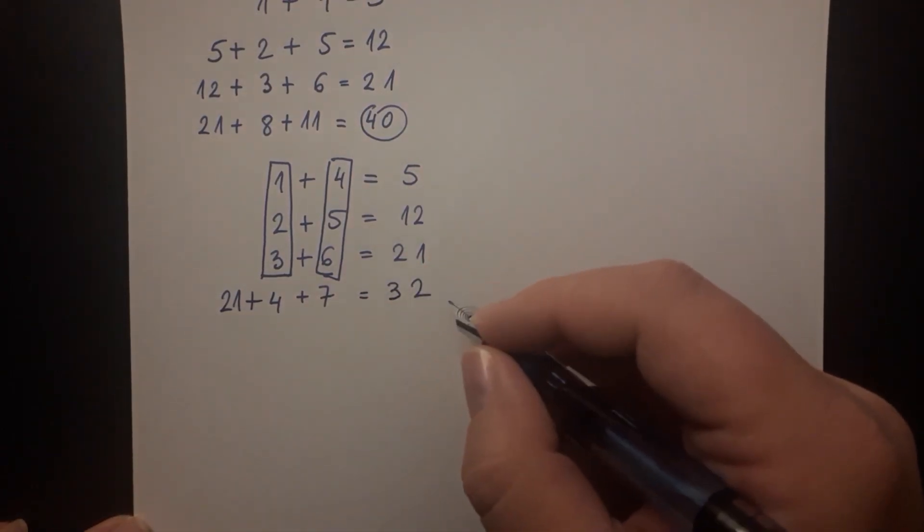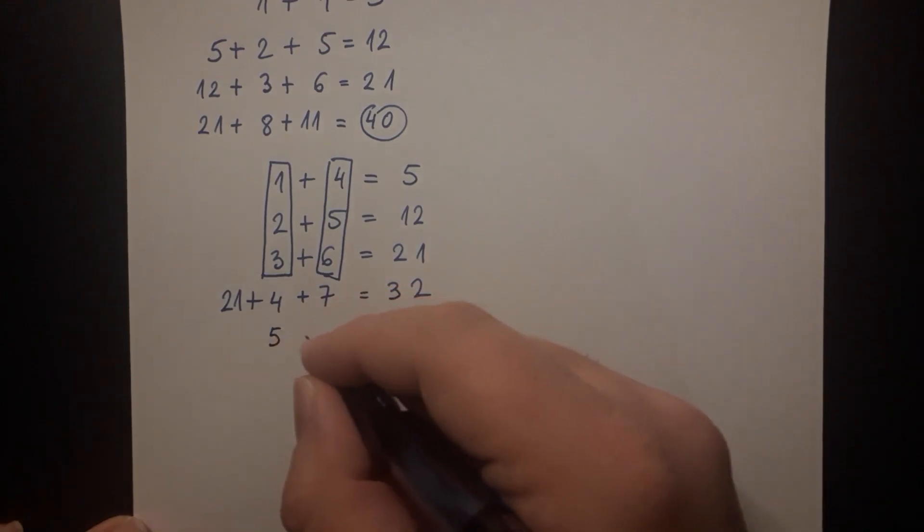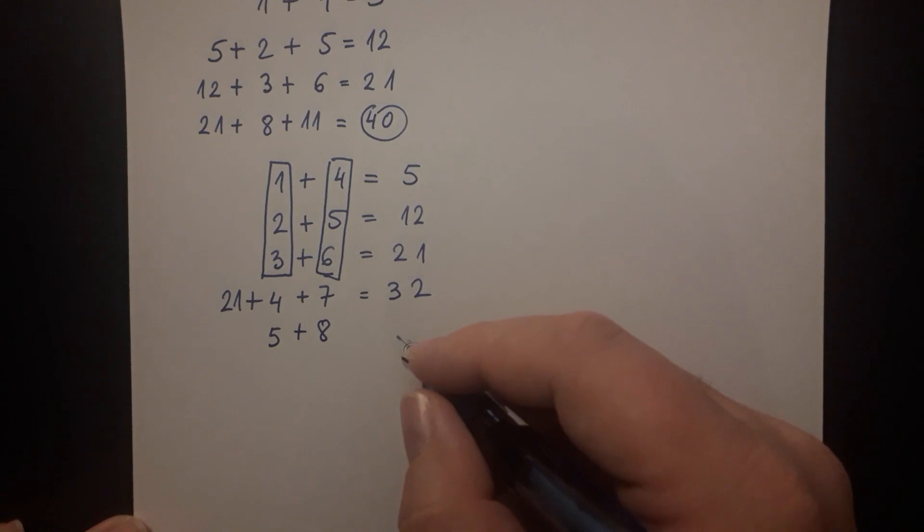What is the next line? We are going to continue the sequence. We had 1, 2, 3, 4 and the next number is 5. And by continuing the other sequence, 4, 5, 6, 7, the next number is going to be 8. So the next line is 5 plus 8.